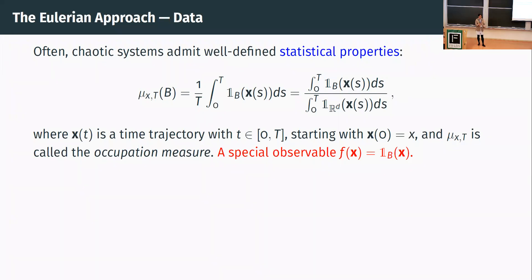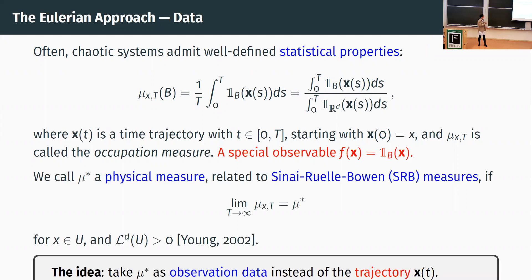The occupation measure is a higher-level statistical quantity extracted from the trajectories. Under certain assumptions on the initial condition — whether from a positive Lebesgue measure or over some measure in the domain — it is related to the physical measure, which under some conditions is exactly the SRB measure, with a lot of theory behind it. The key idea is: instead of treating trajectory points pointwise and matching them in the time domain — which we cannot trust due to many other contributing factors — we take mu-star as observation data. The physical measure is obtained when t goes to infinity, so we use the occupation measure as an approximation, directly extracted from data.